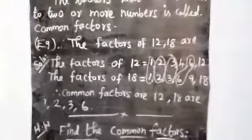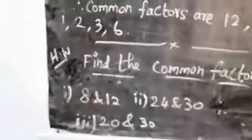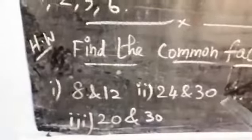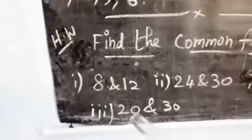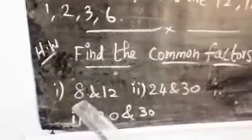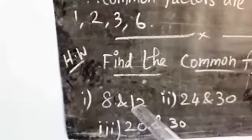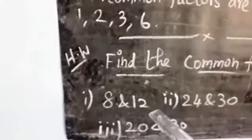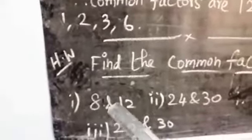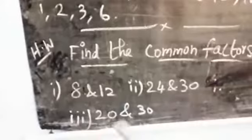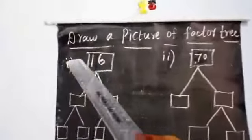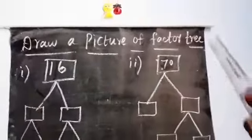That is a common factor. Dear children, this is your homework — find the common factors of: first, eight and twelve; second, twenty-four and thirteen; third, twenty and thirteen. Write the factors of the first number, then the factors of the second number, then write the common factors.